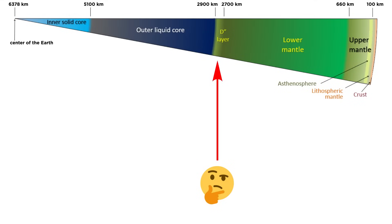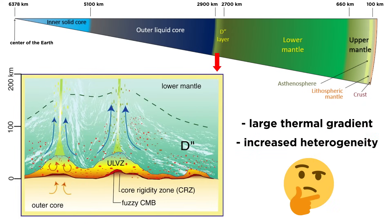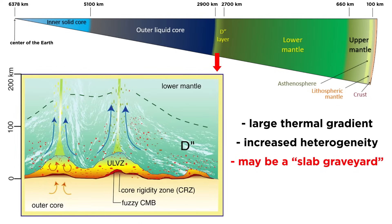At the bottom of the mantle lies a very mysterious but geologically important layer called D''. This layer is marked by a large thermal gradient and increased heterogeneity. The exact nature of this layer is unknown, but there are some hypotheses. Some believe that the D'' layer is the slab graveyard, or the place where subducted slabs eventually settle.